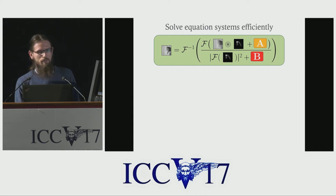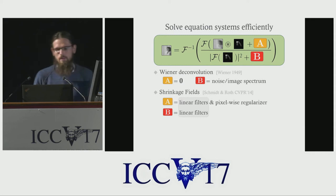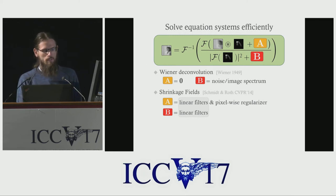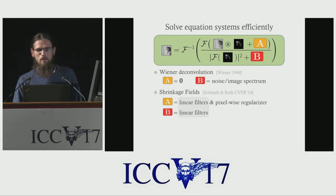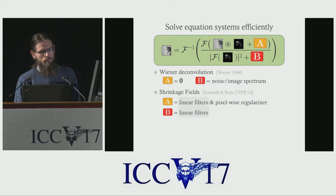F here denotes the fast Fourier transform and A and B are regularization terms. The classic Wiener filter for deconvolution is an example of this, where A is dropped and B is just the ratio of noise and image spectra. More recently and with much better results, Schmidt and Rotter proposed shrinkage fields by discriminatively learning A and B from training data. However, their regularizer A is limited since it consists of shrinkage functions applied pixel-independently, and they learn linear filters shared among A and B.